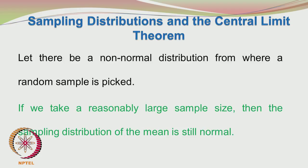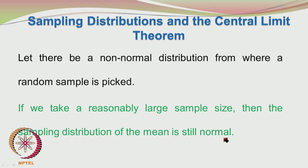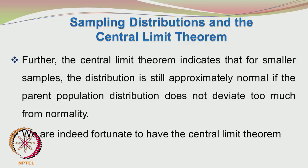If there is a non-normal population from where a random sample is picked and we take a reasonably large sample size, the sampling distribution of the mean is normal. Further, even for smaller samples, the distribution is still approximately normal if the parent population distribution does not deviate too much from normality. So it is indeed fortunate that we have the central limit theorem.